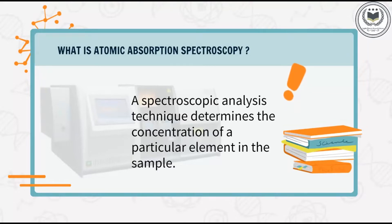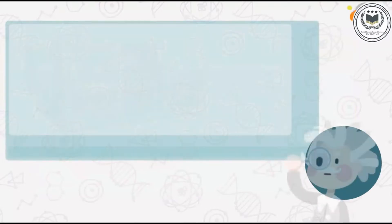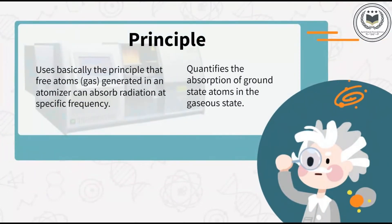AAS is a spectroanalytical procedure for the quantitative determination of chemical elements using the absorption of optical radiation by free atoms in the gaseous state. The technique uses the principle that free atoms in gas, generated in an atomizer, can absorb radiation at specific frequencies. AAS quantifies the absorption of ground state atoms in the gaseous state.